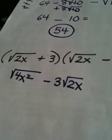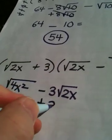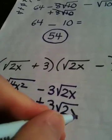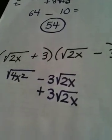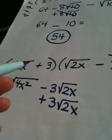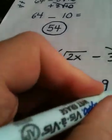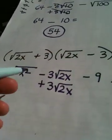The inner: 3 root 2x is positive 3 root 2x, and again I'm aligning them because they're going to combine. Then my last: 3 times negative 3 is negative 9.